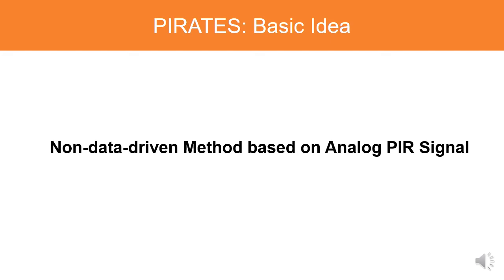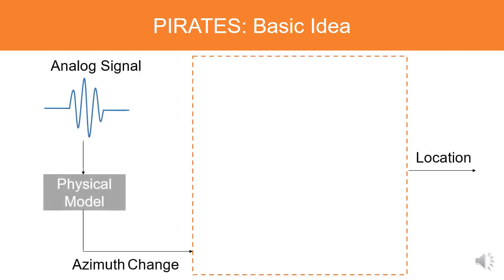PIRATES mainly contains two steps. First, it utilizes the analog signal of a PIR sensor to estimate the person's azimuth change based on the physical model of the PIR sensor.